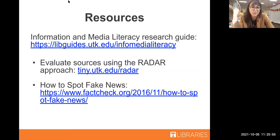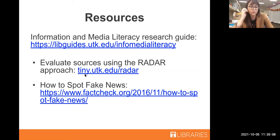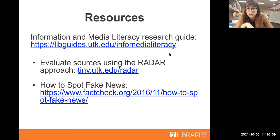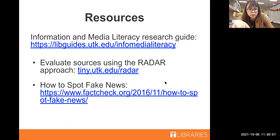RADAR stands for Relevance, Authority, Date, Appearance, and Reason for writing. Relevance - is this information relevant to your assignment or what you're researching? Authority - who is the author, and what makes them authoritative on that topic? Date - when was this information published, and is that important to your research? Appearance - what clues can you get from the appearance of the actual source, like whether it has citations or references? And Reason for writing - why did this writer publish this information? The article linked in the research guide goes more in depth into the kinds of questions you can ask yourself using this approach.